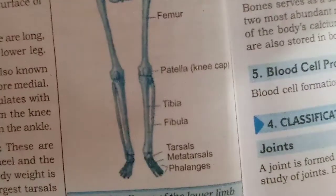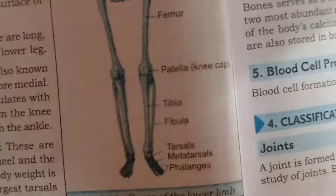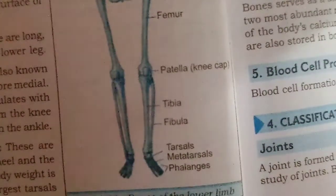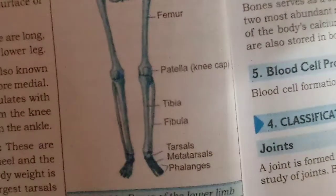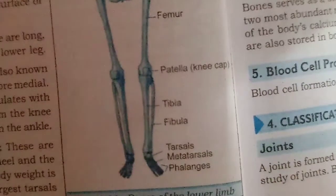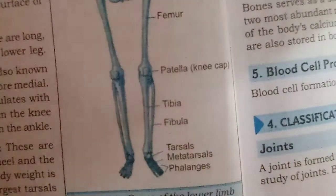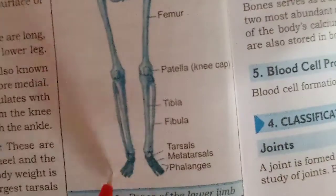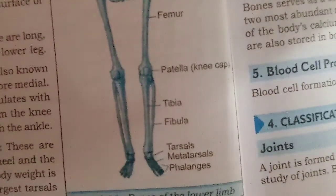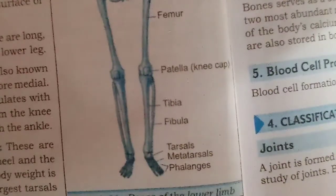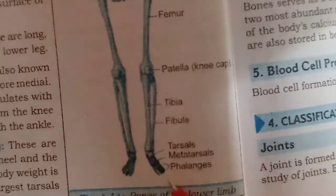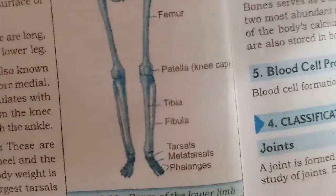Then we have the metatarsals — 10 in number, since we have 10 fingers. Each foot consists of 5 metatarsals, so totally there are 10. Next are the phalanges — 28 in number. In the toes there are three phalanges per toe, except the greater toe which has two. The remaining four toes have three phalanges each, giving a total of 28.